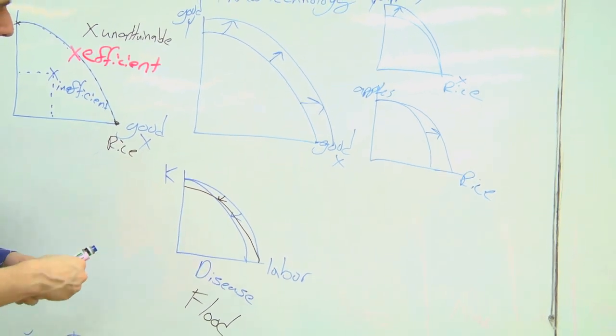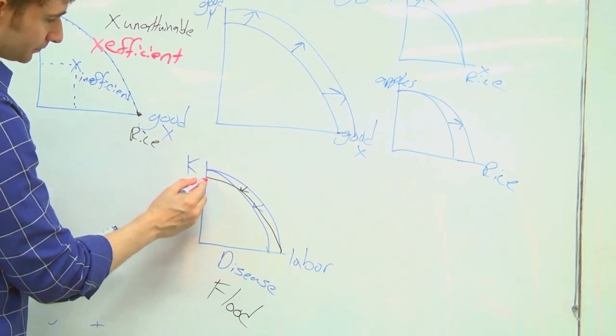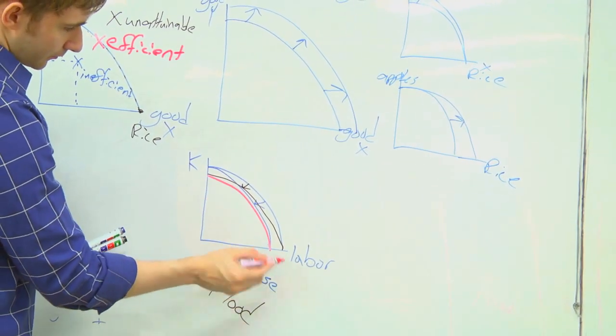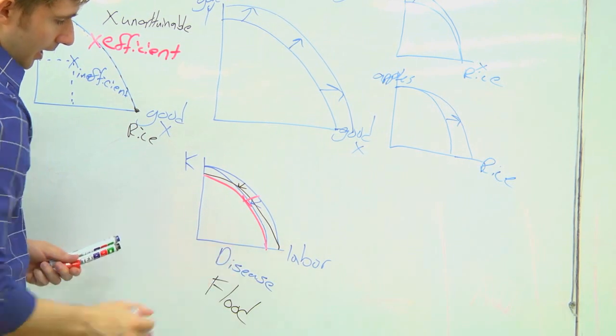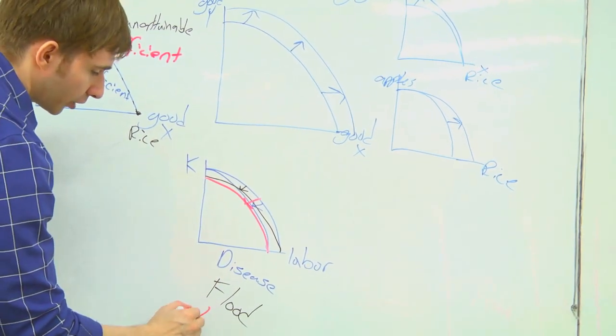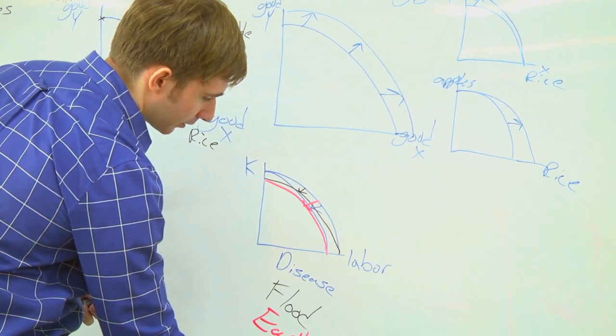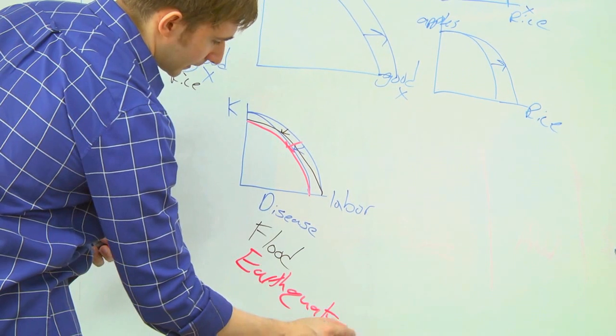And lastly, we could decrease both our capital and our labor. And that might be something like an earthquake comes along and destroys our buildings, our factories, and our labor force.